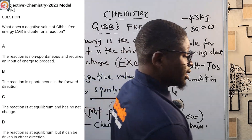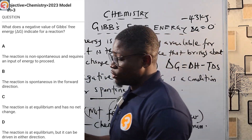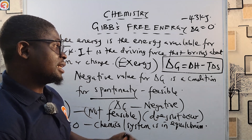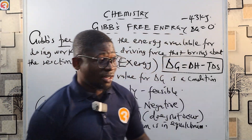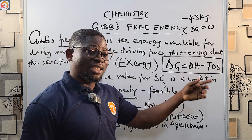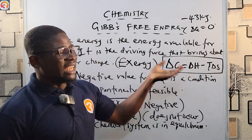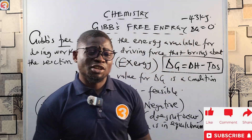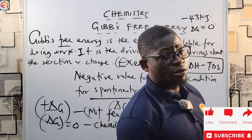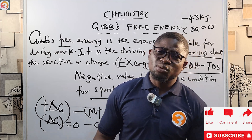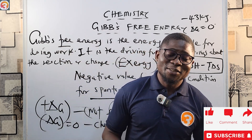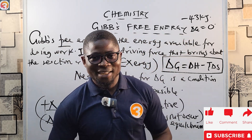That concludes this episode on chemical energetics and energy changes. Remember the formula ΔG = ΔH − TΔS — it is vital for calculations. If ΔG is negative, the reaction is feasible; if ΔG equals zero, the system is at equilibrium; if ΔG is positive, it is not feasible. Thank you very much — I'm your favorite teacher, and I'll see you in the next episode where we start discussing air and water. God bless you.